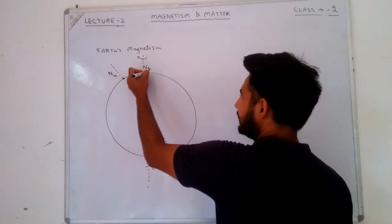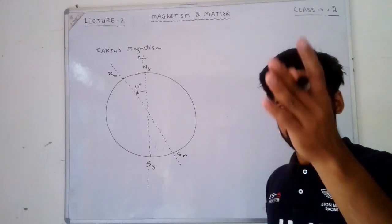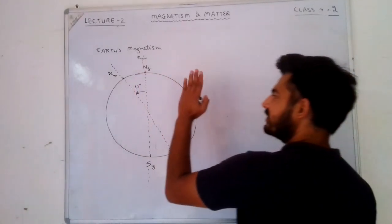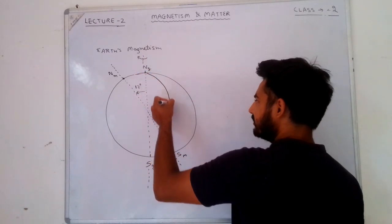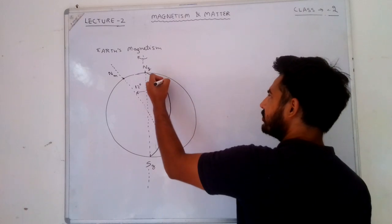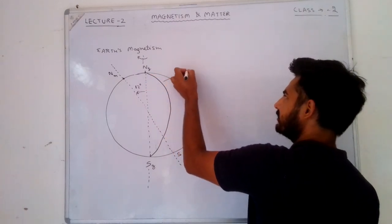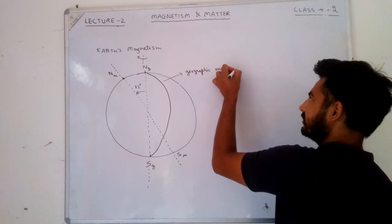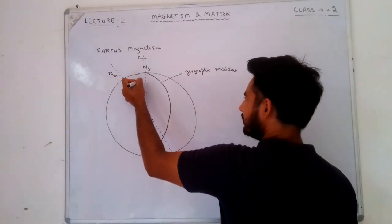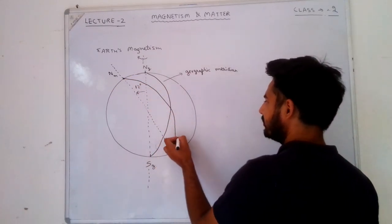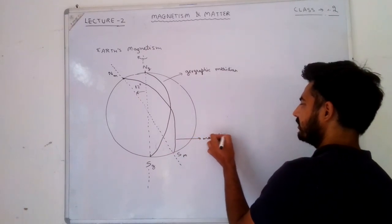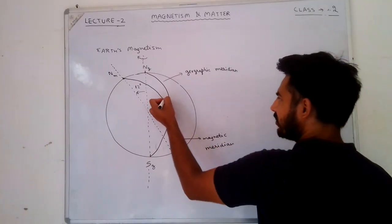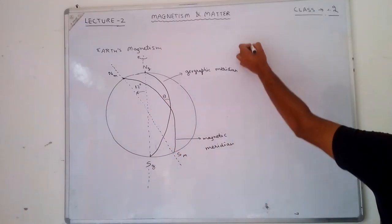On the surface of Earth there are meridians — vertical planes like this on the surface. This is called the geographic meridian. And this other one is called the magnetic meridian.